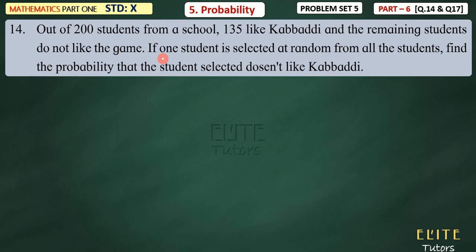If one student is selected at random from all 200 students — who are the ones who like to play and who don't like to play — we have to select one student. Find the probability that the student selected doesn't like a buddy.